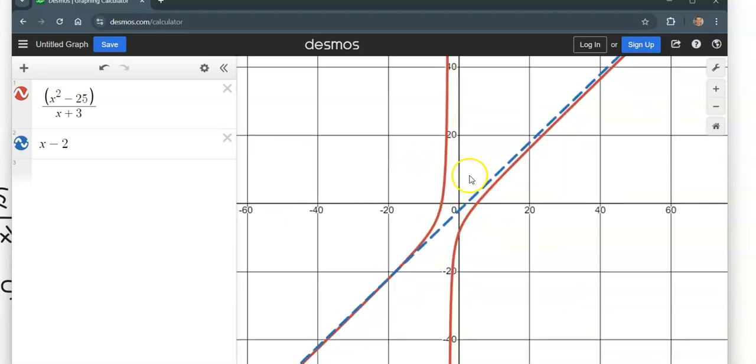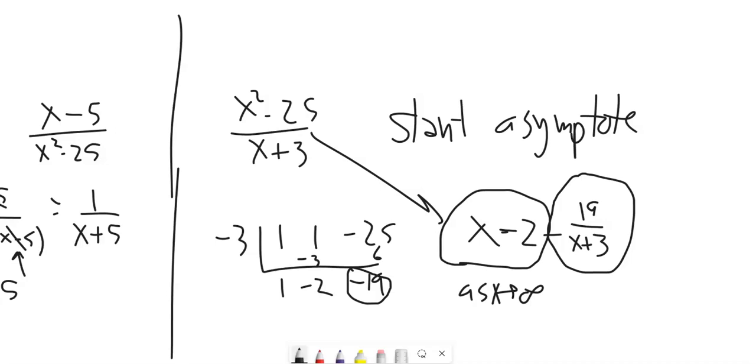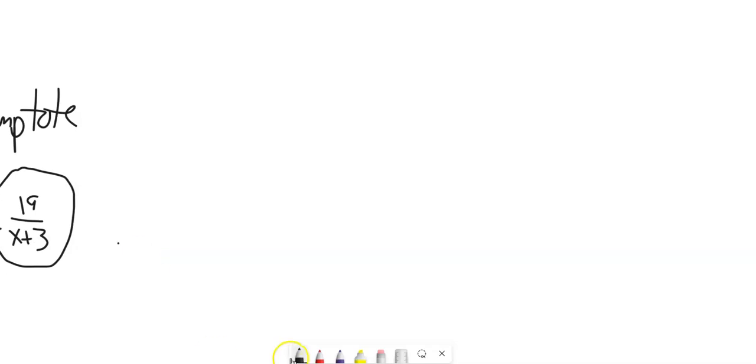So the slant asymptote, like I said before, happens when we've got one degree apart here. And our examples will be quadratic over linear. So here's another example, so we can find the slant asymptote for it. All the other stuff that we've been doing applies, right? Vertical asymptotes, it won't have both a slant and a horizontal asymptote. It'll only have one of the two.